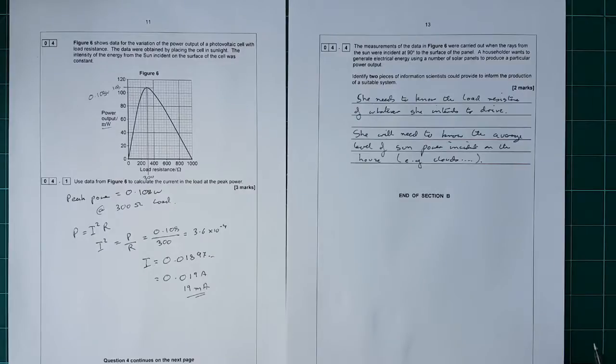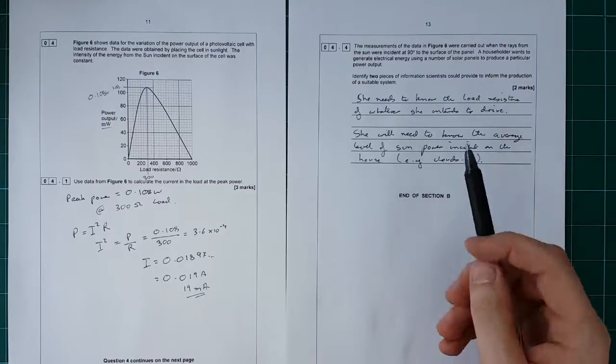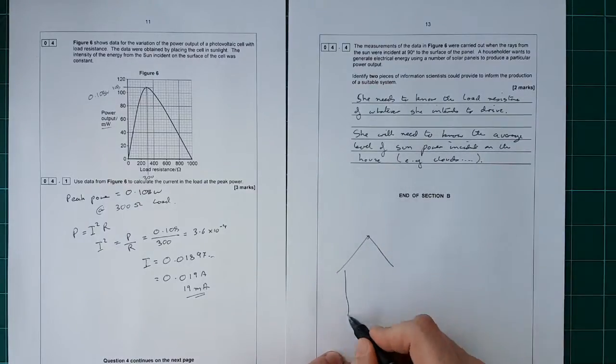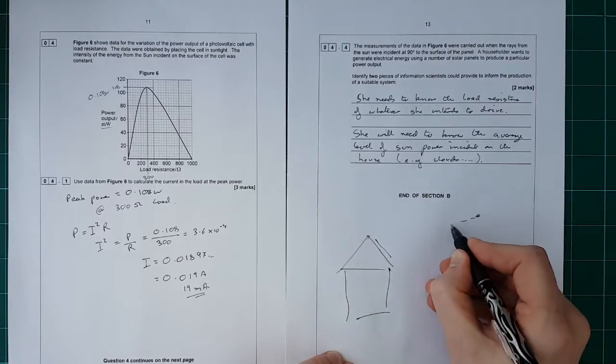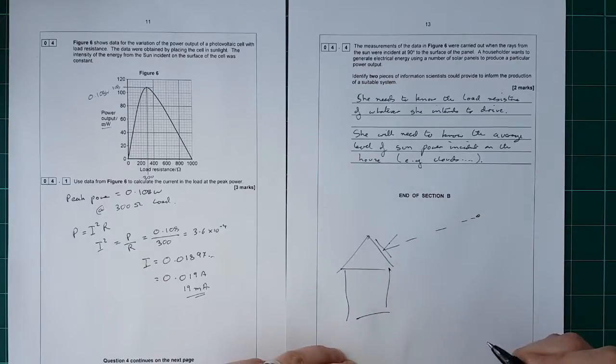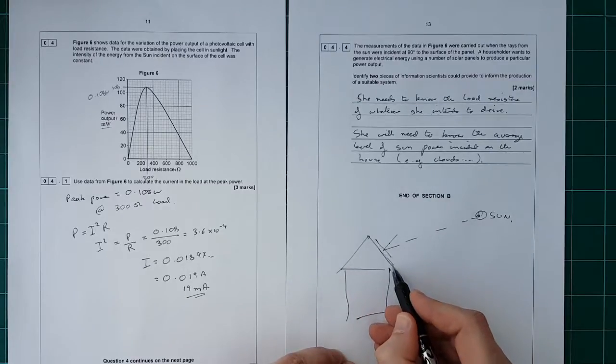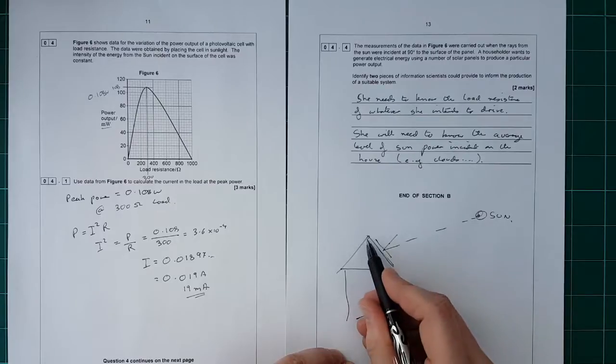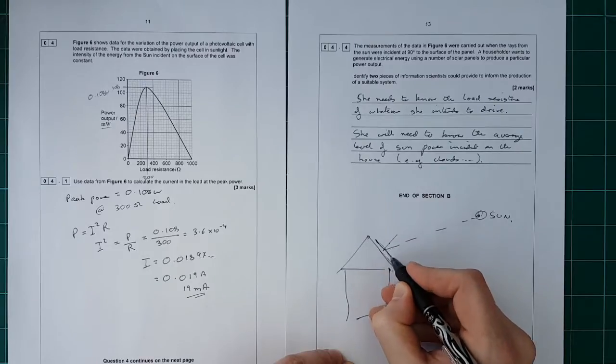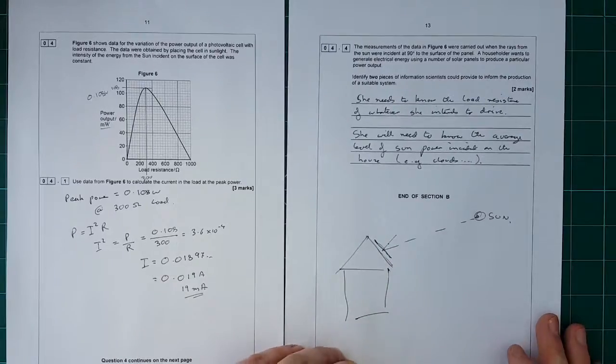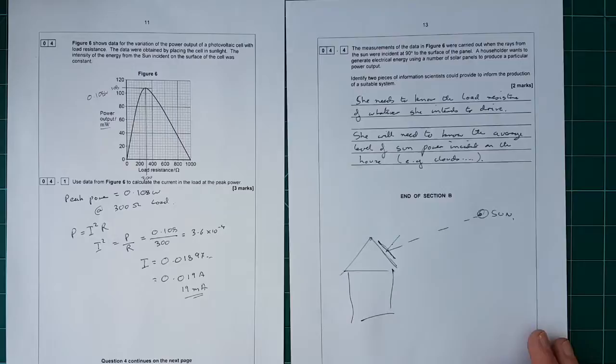Other answers you could say are the angle of the roof and how that corresponds to the position of the sun - if the roof is there and the sun is down here, it's not going to hit at 90 degrees. You could also say the compass heading of the roof, because in the northern hemisphere you want to put solar panels on south-facing roofs. That's the end of question 4; there are lots of different answers for that one.